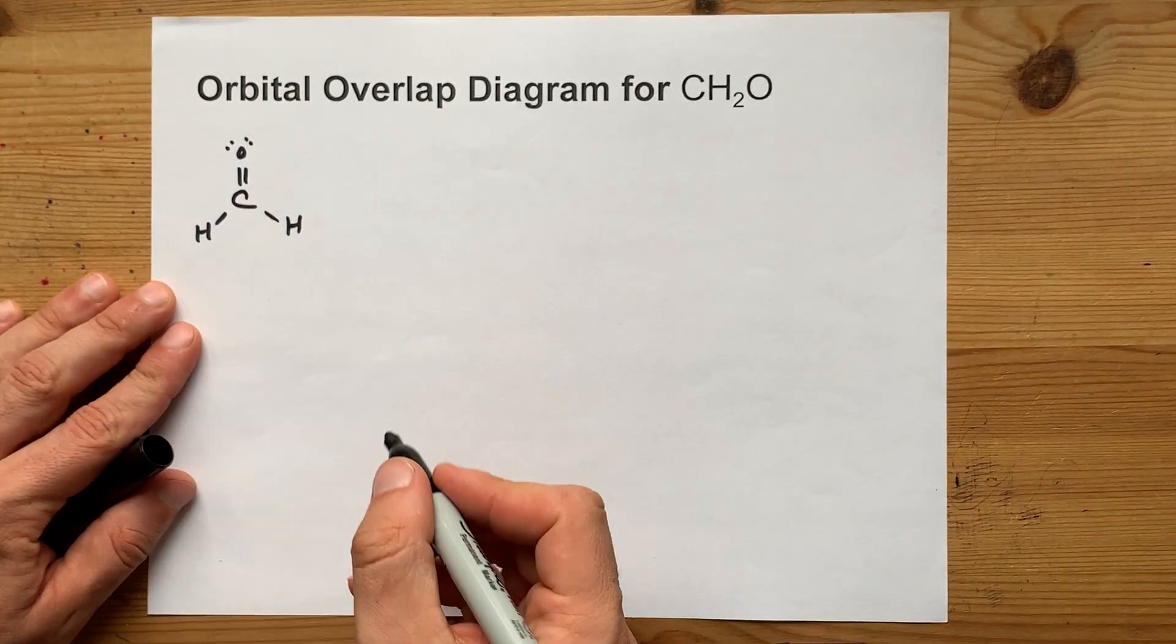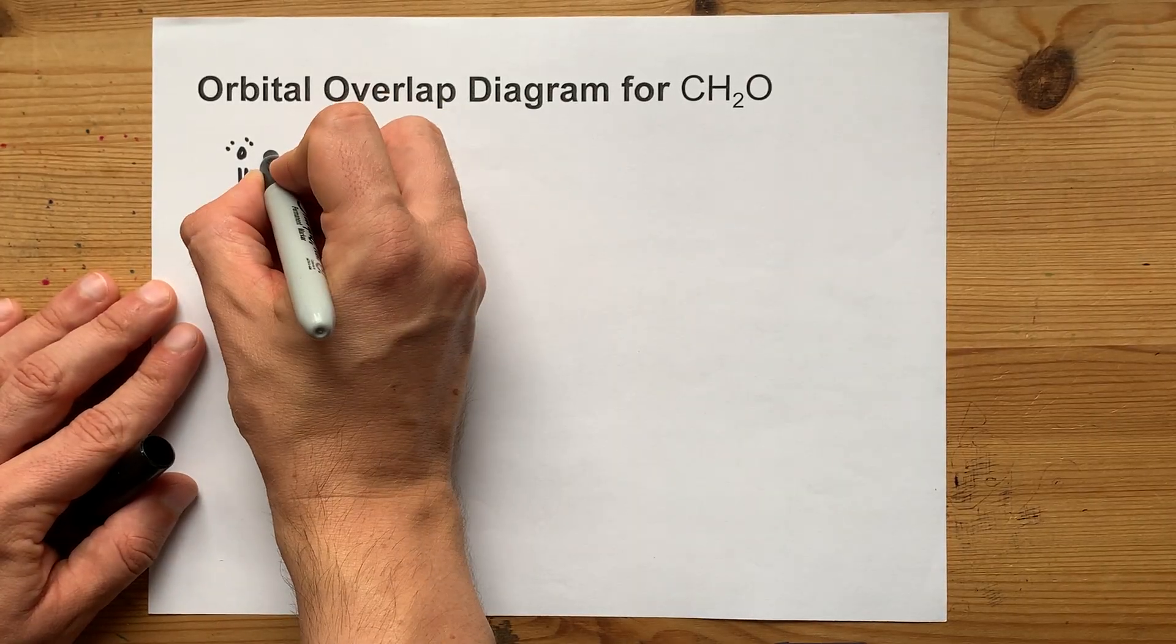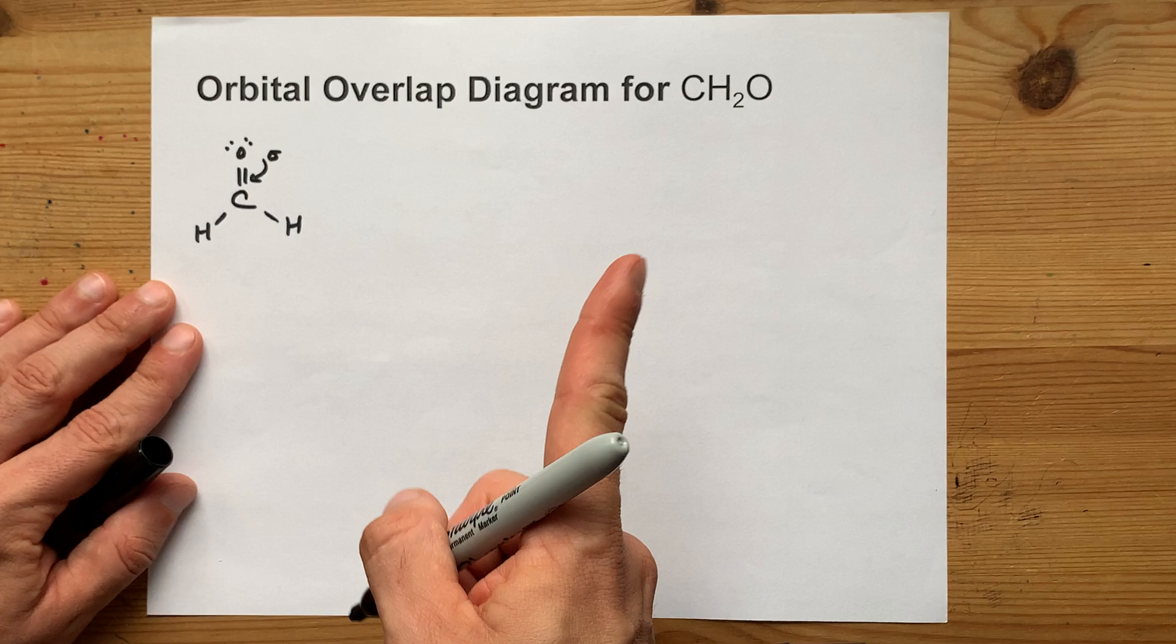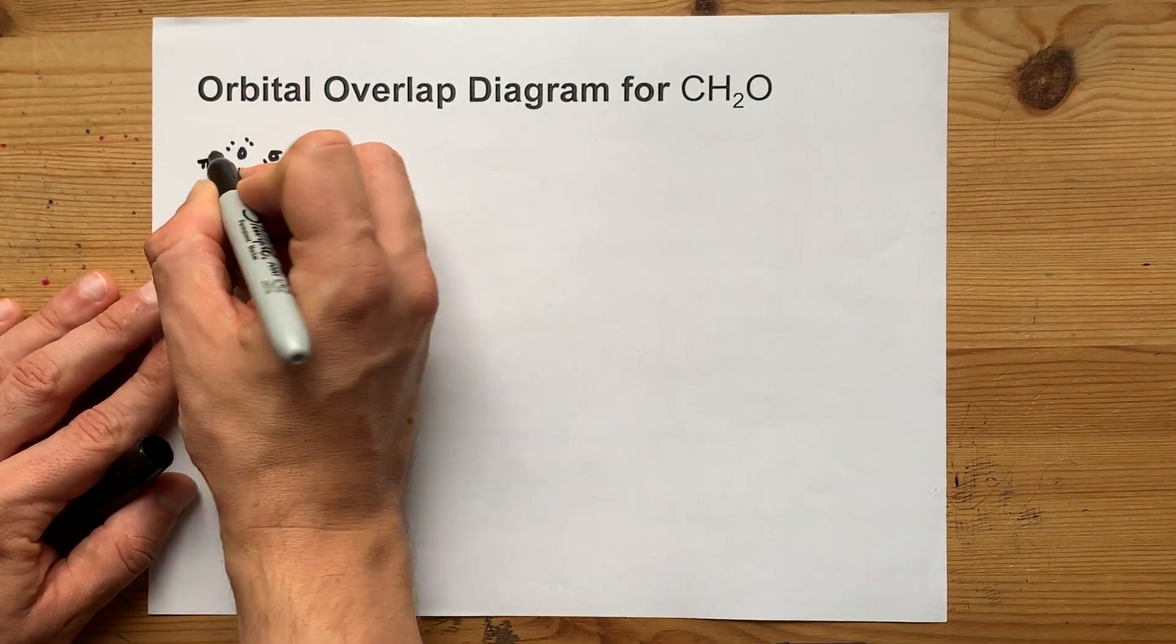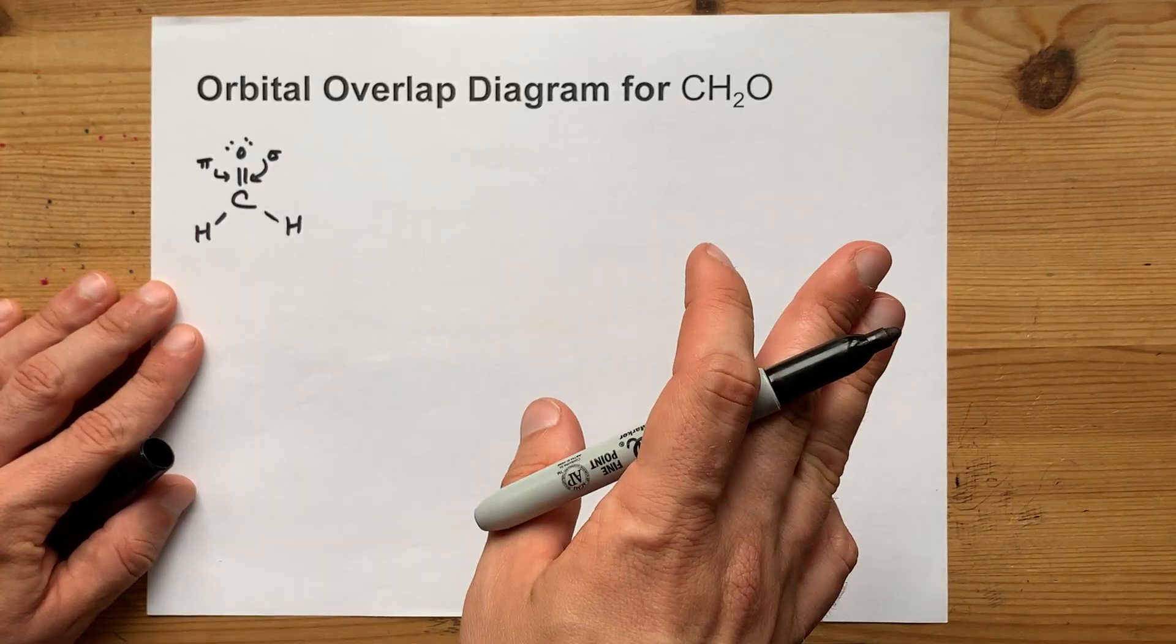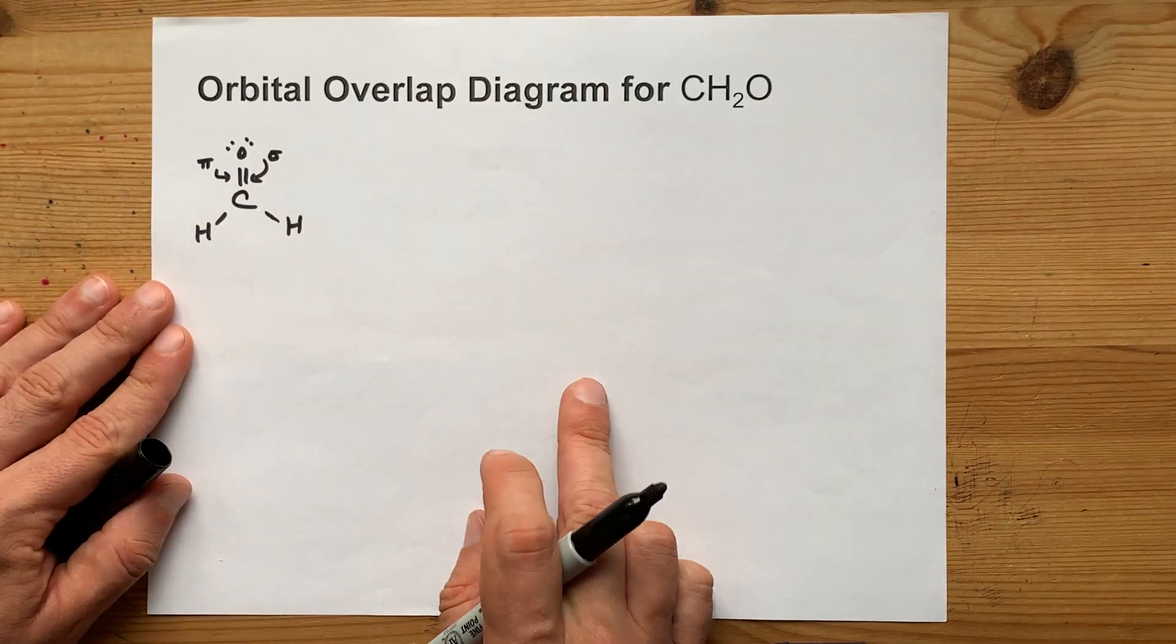That's going to be the key to your orbital overlap diagram. A double bond always consists of a sigma bond, that's the first bond between any two atoms, and a pi bond, that's the second and third bond between any two atoms, but it's just that one for the second here.